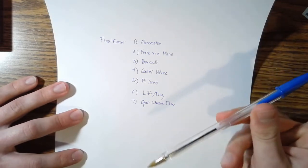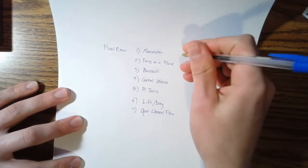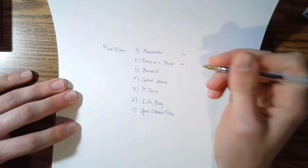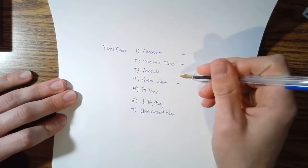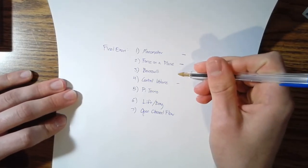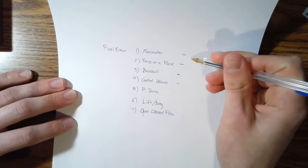So we're walking through those as we're going along here. We did a manometer one yesterday and a force on the plane one yesterday. Today we're going to do a control volume, but it also doubles or triples as a Bernoulli and another manometer.